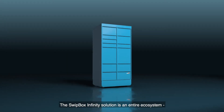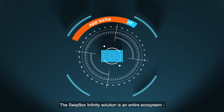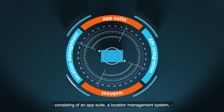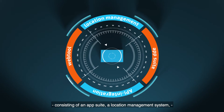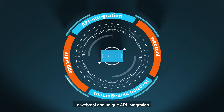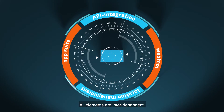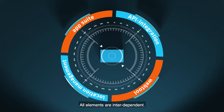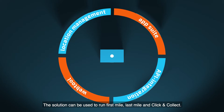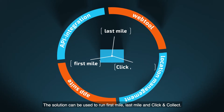The Swipbox Infinity solution is an entire ecosystem consisting of an App Suite, a location management system, a web tool, and unique API integration. All elements are interdependent. The solution can be used to run first mile, last mile, and click and collect.